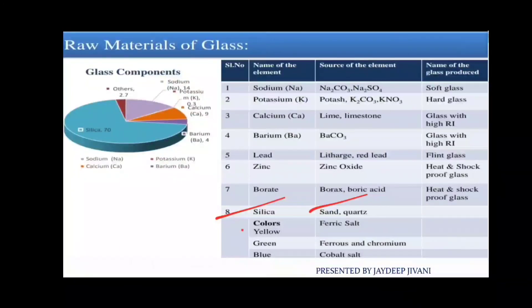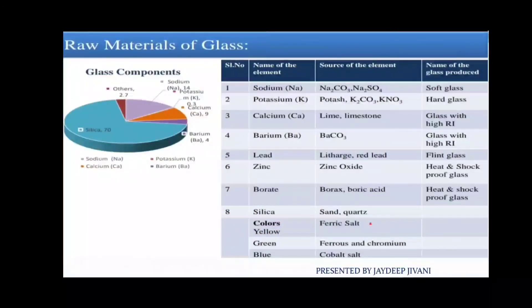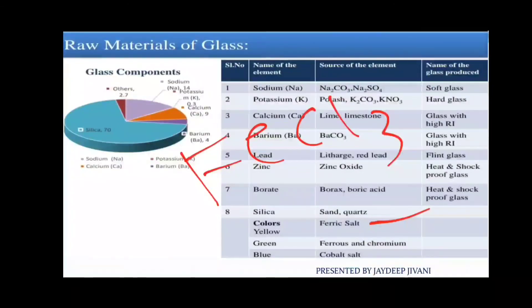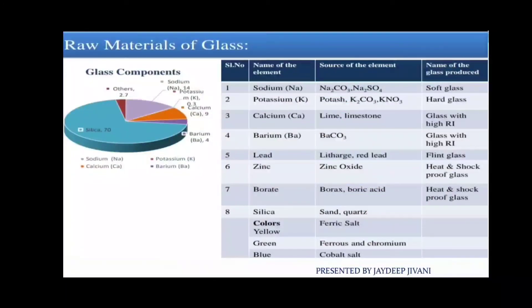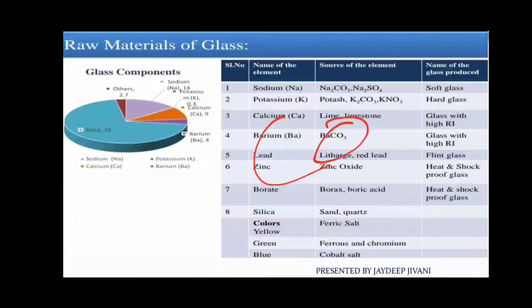Other elements are used for adding color to glass. The first is ferric salt — FeCl3 — which produces a yellow color. Green color comes from ferrous (Fe) and chromium (Cr). Blue color comes from cobalt (Co). So yellow uses ferric salt, green uses ferrous and chromium, and blue uses cobalt. This is all about the raw materials of glass. Thank you friends.